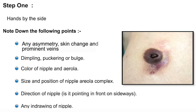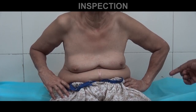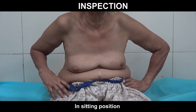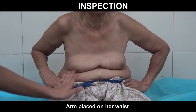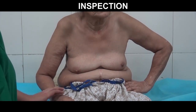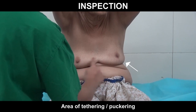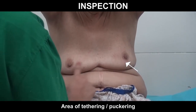Please note down any indrawn nipple on either or both sides. We shall demonstrate inspection and palpation on a lady aged 74 who came with a painless lump in her left breast along with blood-stained nipple discharge from the left nipple — both noted two months ago. We begin inspection by requesting the lady to keep her hands on the waist. We observe no gross asymmetry between the two glands and the nipple-areola are at the same level. On raising her arms above the head, we observe a bulge in the inner side of the left breast and slight retraction of the left nipple.